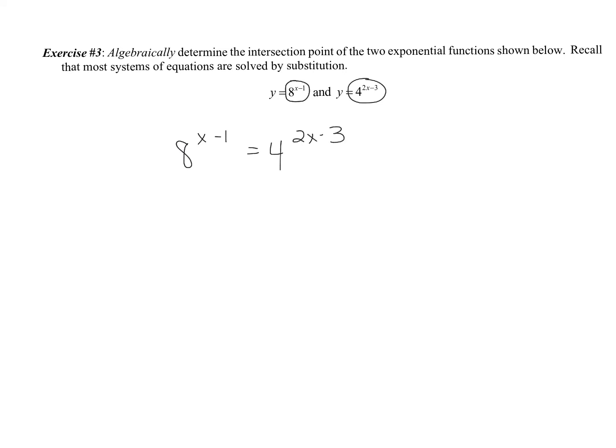We notice that 8 and 4 are both powers of 2, so I'm going to rewrite 8 as 2 cubed and 4 as 2 squared. Bring down the exponents we already have. Cancel the common bases. So this one is 3x minus 3 equals 4x minus 6 when we distribute.